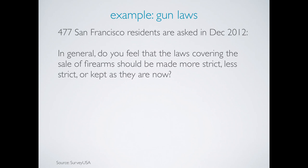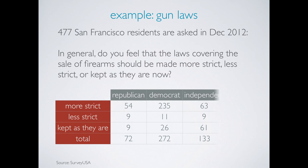The respondents were also asked their party affiliation. The distribution of the responses are displayed in a contingency table. Using this table, we can evaluate whether or not there is a relationship between San Francisco residents' opinion on gun laws and their party affiliation.